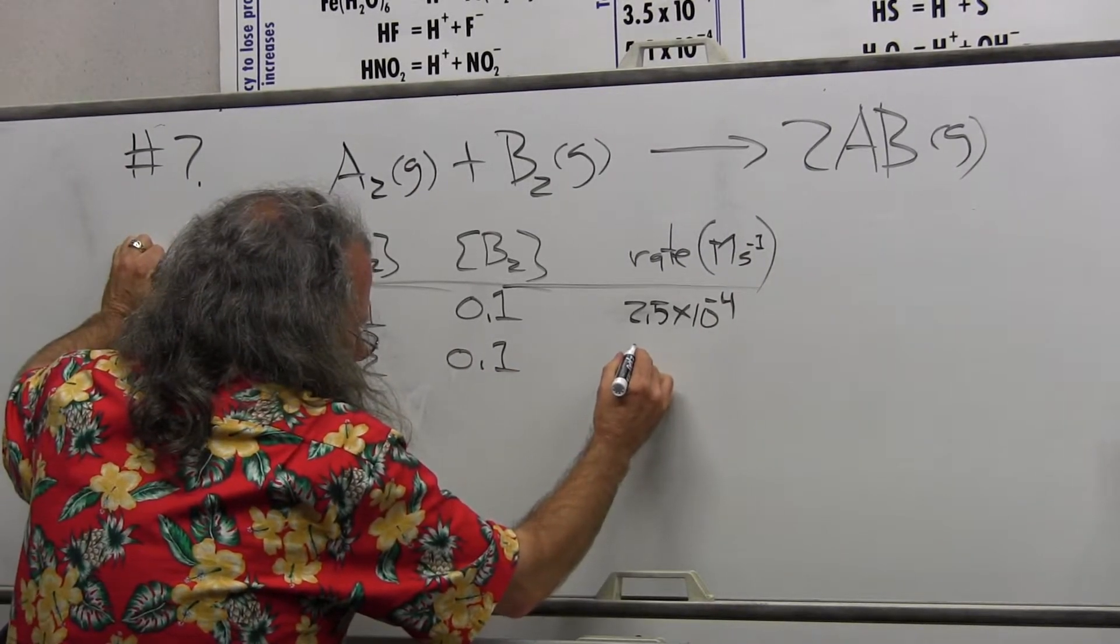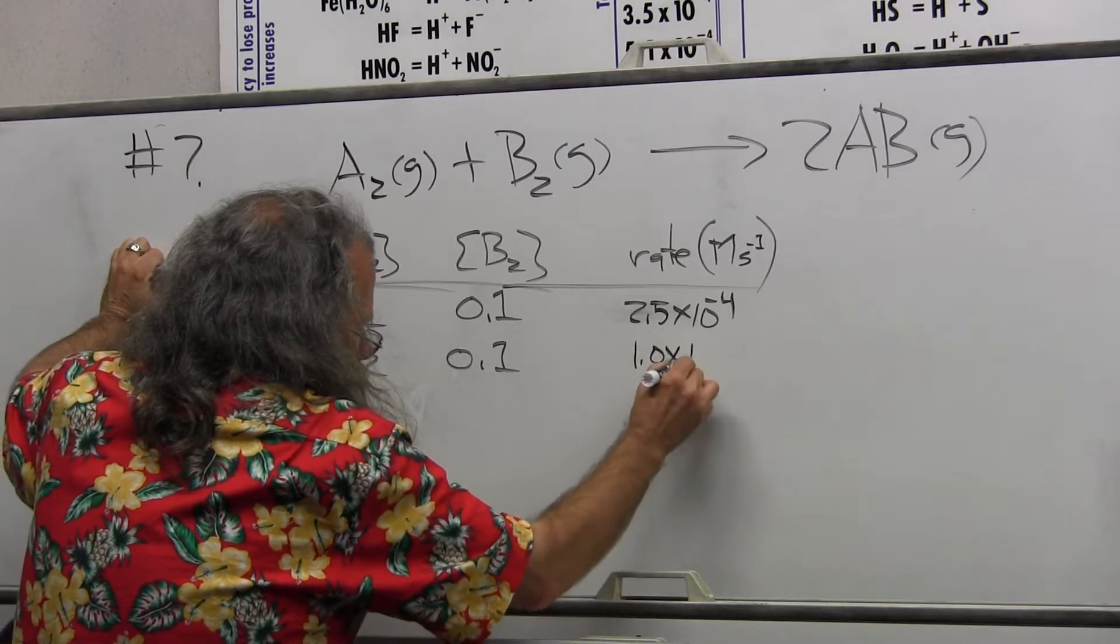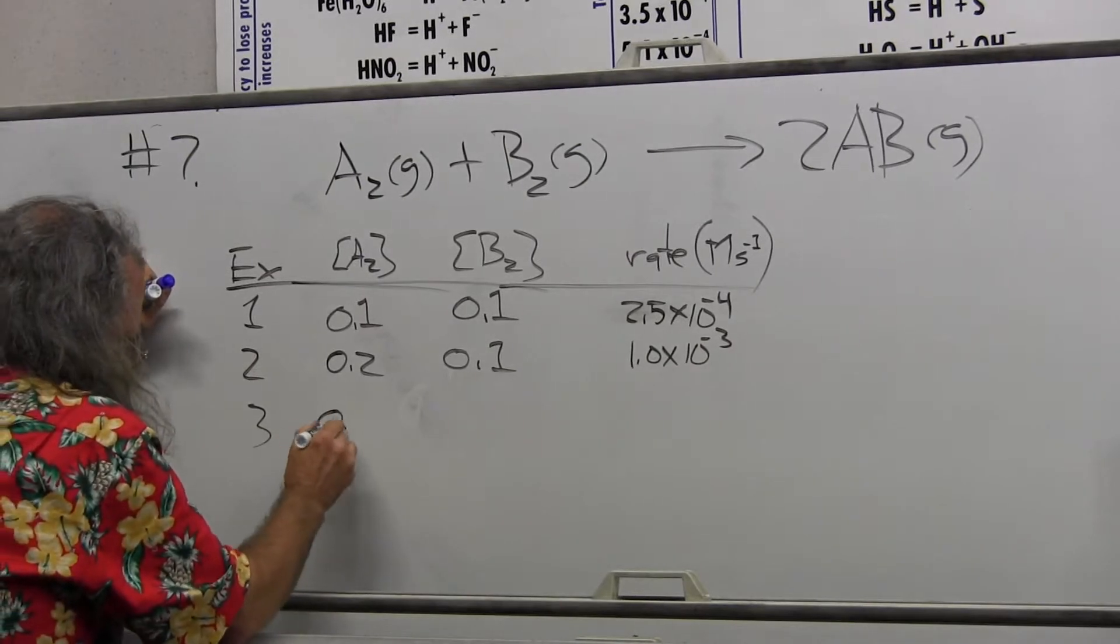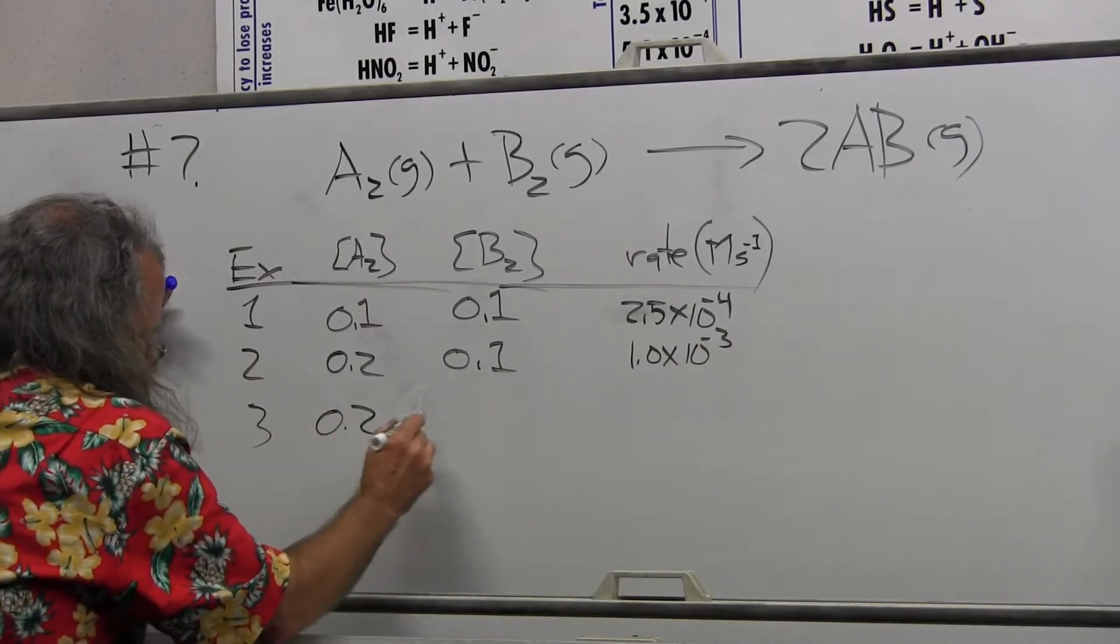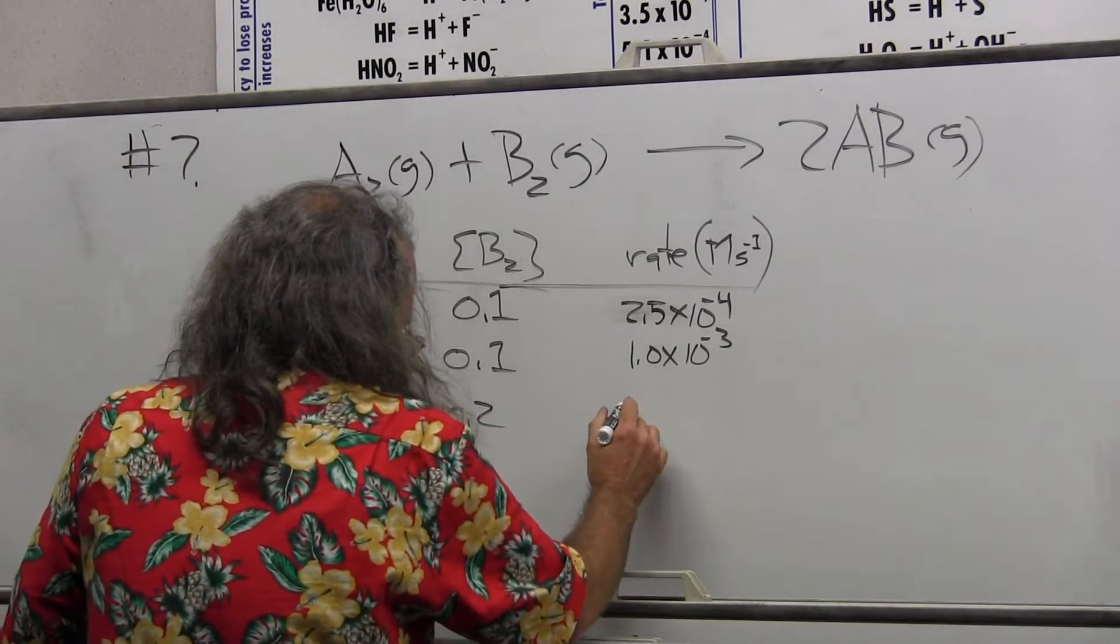Sorry, 1 times 10 to the minus 3. And this one would be experiment three: 0.1 and 0.2. What is it? 2 times 10 to the minus 3.